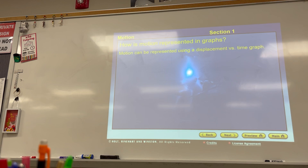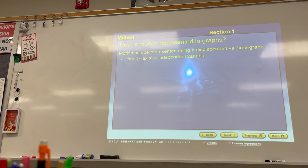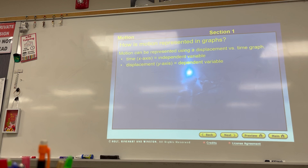I'm going to have two axes — the horizontal x-axis and the y-axis. On my x-axis we're going to have time, which is going to be my independent variable. And on my y-axis we'll put displacement, which is the dependent variable. We'll talk about what independent and dependent variables are.